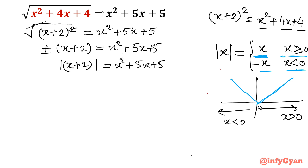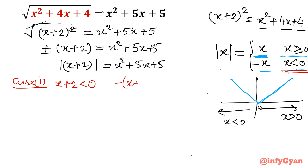Let me write this function in two cases. Case 1: x + 2 is negative, meaning x + 2 < 0. Inside the mod we have x + 2, so if it is less than 0, the equation becomes -(x + 2) = x² + 5x + 5. Taking all terms to one side gives x² + 6x + 7 = 0.